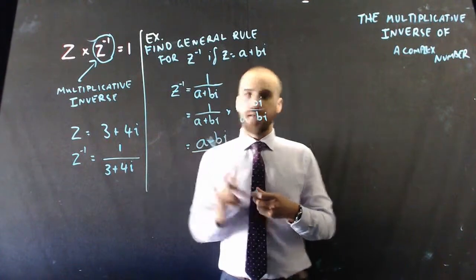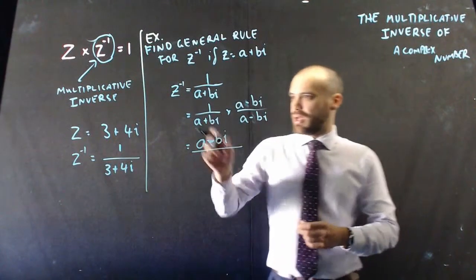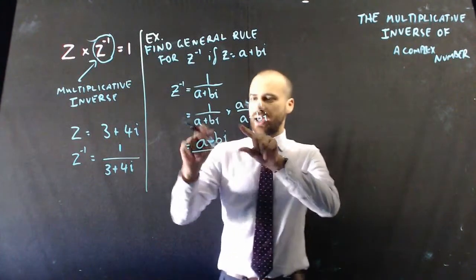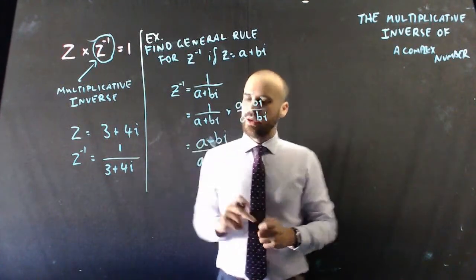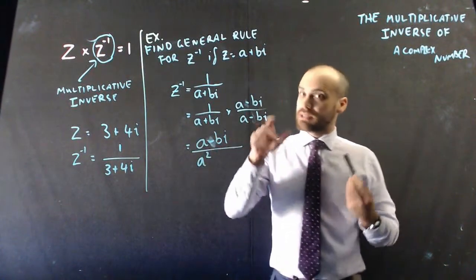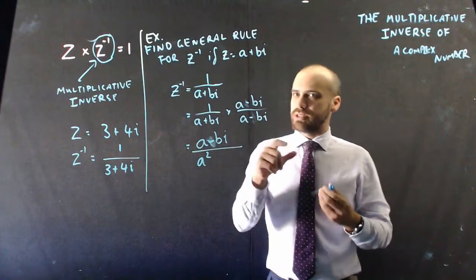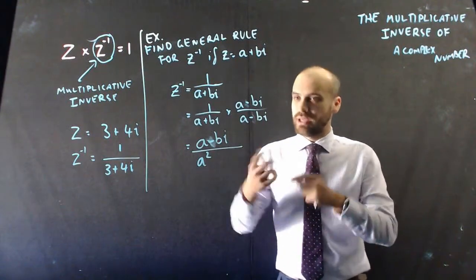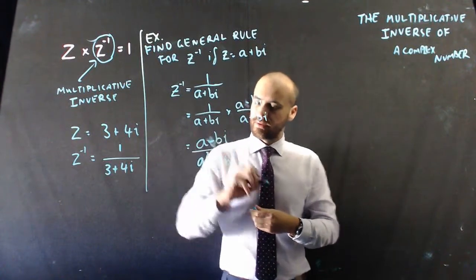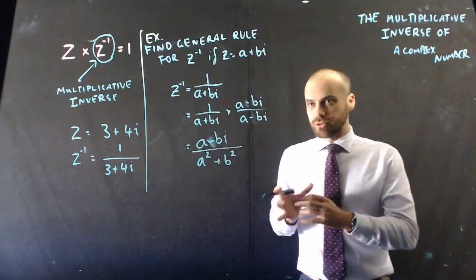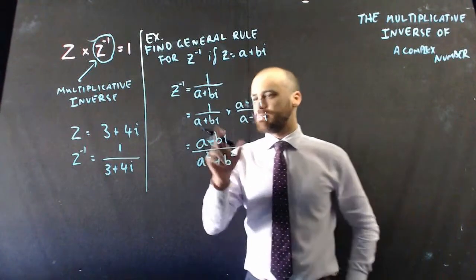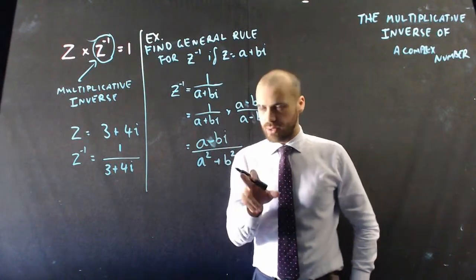So it's going to be a minus bi on the top. And then if I do a plus bi times a minus bi, I'm going to get a squared. And then, again, we have to be really careful here. B times negative b is going to be negative b. But i squared is going to be negative i. So it's going to be positive. So my general rule complete. Because those middle bits cancel each other out. I get a minus bi over a squared plus b squared.